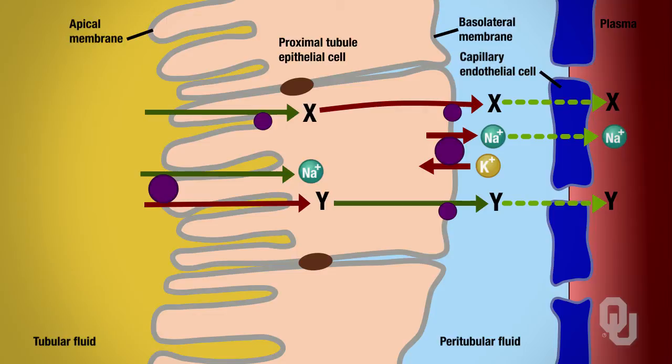So we have less solute in the lumen because we've reabsorbed those solutes. So if there's less solute, now we know there's more water, right? They're relative to one another. So now we created an osmotic gradient, and now water can be reabsorbed.